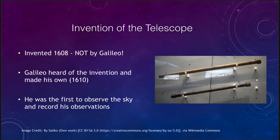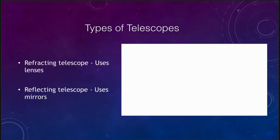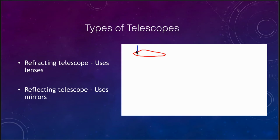There are two primary types of optical telescopes. The first is the refracting telescope, which uses lenses to bring things to a focus. Light travels through the lens, gets bent, and is brought to a focus, allowing you to gather more light than you would otherwise be able to see.